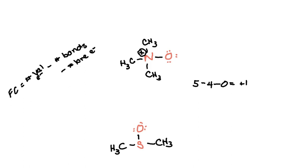Then oxygen has six valence electrons. Here it has one bond and six lone electrons, so we get negative one.